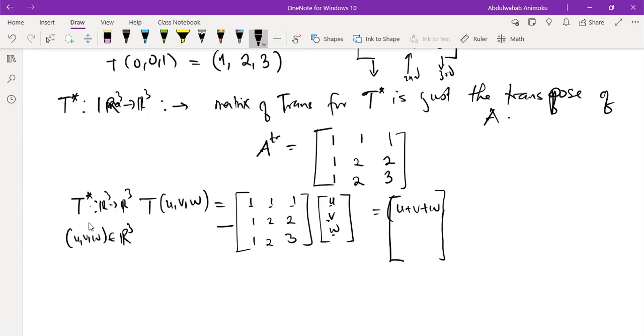So what we do next is we multiply the second row with this, with the same column u, v, w. So 1 times u, that will be u, 2 times v is 2v, 2 times w is 2w. And finally, we multiply the third row with the same vector, so we have u plus 2v plus 3w.